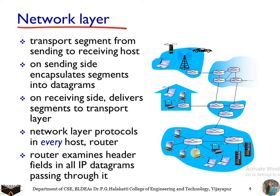On the receiving side, the network layer receives the segments and passes them to the transport layer above. The network layer protocol is present in every host as well as in every router. Each router consists of three layers: the network layer, the data link layer, and the physical layer. Every intermediate device has all the layers, but the packet flows through only the bottom three layers — up to the network layer. The router examines the header field in all IP datagrams passing through it.